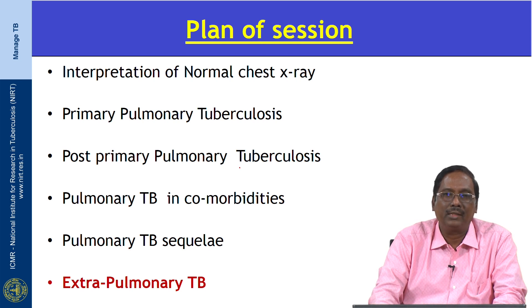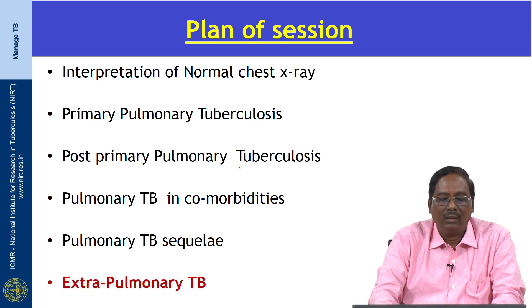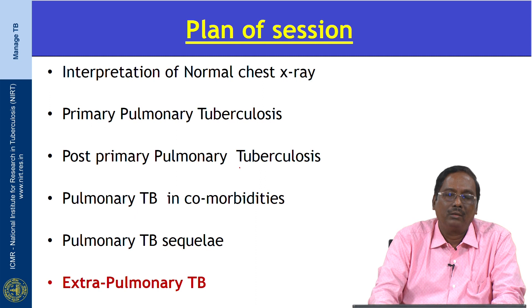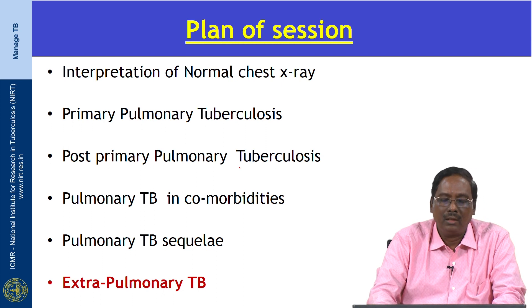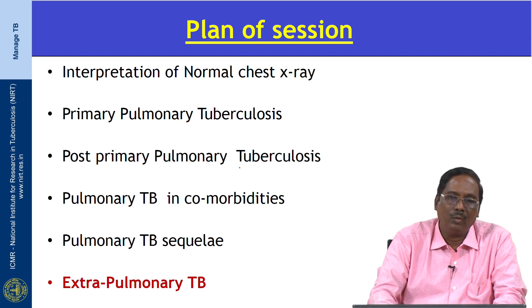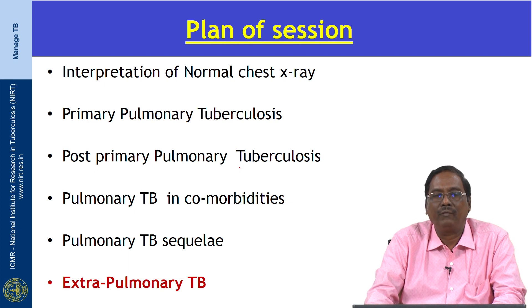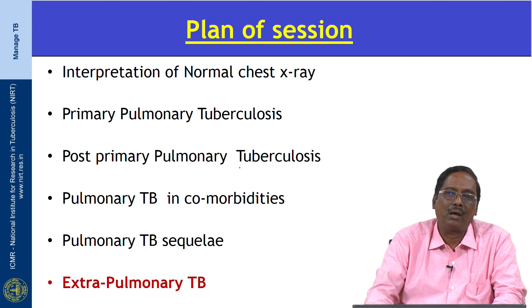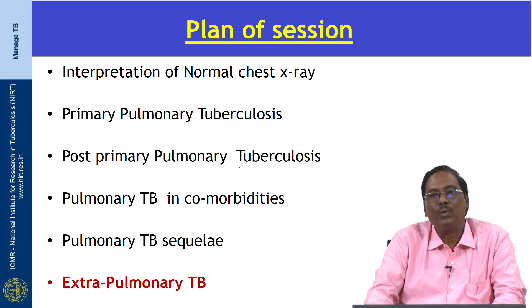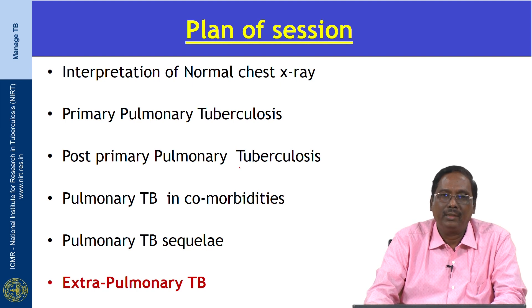Extra-pulmonary TB always involves spread via hematogenous route or by direct extension from a primary TB focus. It can present either as primary TB alone or alongside primary pulmonary TB. It accounts for 15 to 20 percent of pulmonary tuberculosis cases. Diagnosis is often very difficult, but a high index of clinical suspicion combined with typical or atypical radiological features can help diagnose extra-pulmonary TB.